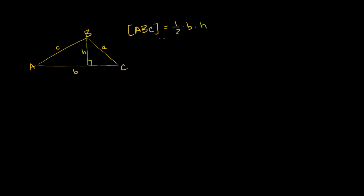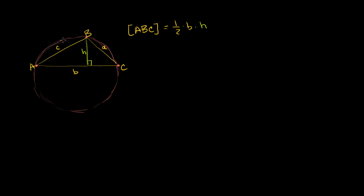Let's see if we can somehow relate the area to the radius of this triangle's circumscribed circle. A circumscribed circle is a circle that passes through all of the vertices of the triangle, and every triangle has a circumscribed circle. It might look something like this — that is the circumcircle for this triangle, or this triangle's circumscribed circle.